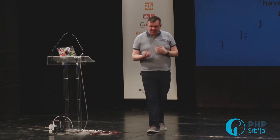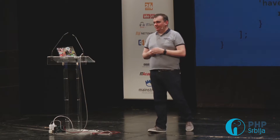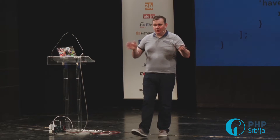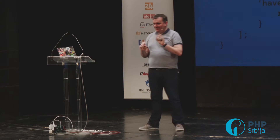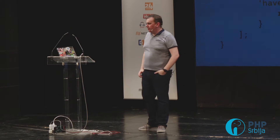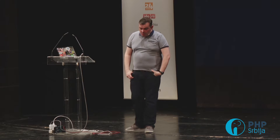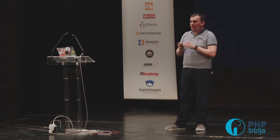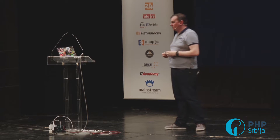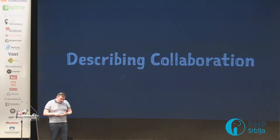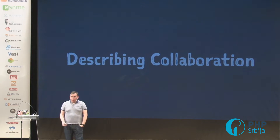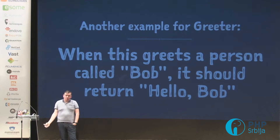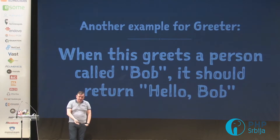Now the interesting stuff. Objects just returning values isn't that interesting in OO. The interesting thing about object-oriented programming is that objects talk to each other — sometimes when I talk to one object it doesn't just return a value, it talks to another object, and that one talks to another. This is called collaboration. It's very important to describe in as fluent a way as possible. Let's come up with a next responsibility: when it greets a person called Bob, it should return 'hello Bob.'